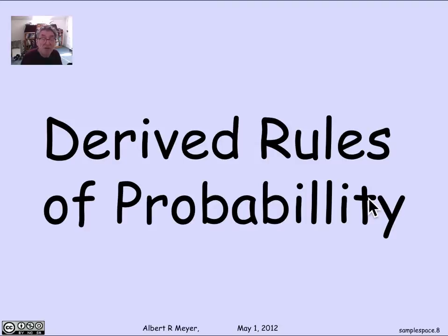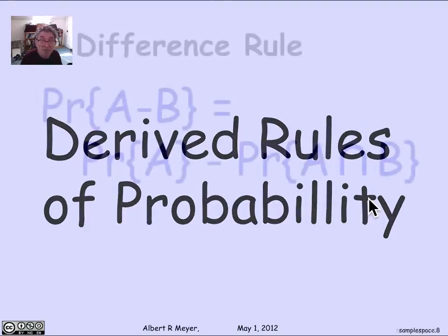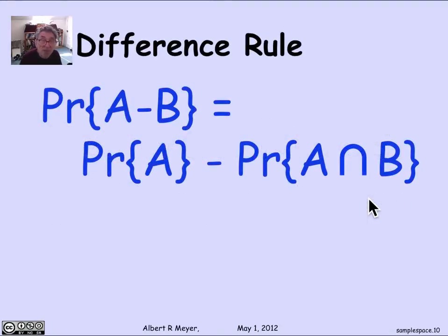Let's quickly point out some rules that are now corollaries, derived rules of probability theory that follow as a consequence of the countable sum rule. The first is the difference rule. The probability of A minus B is simply equal to the probability of A minus the probability of A intersection B. Notice how much this looks like the difference rule for cardinalities, that the cardinality of the finite set A minus B is the cardinality of A minus the cardinality of A intersection B.